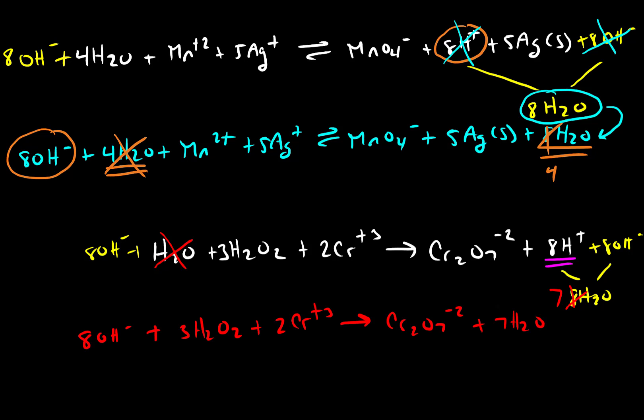So if we rewrite this, we end up with a balanced electrochemical reaction that includes hydroxide as a reactant and does not include a proton as a reactant or a product.